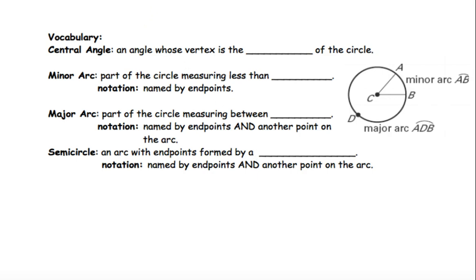This is day two of our circles and we're going to talk about different kinds of angles. The main angle we're going to talk about is called the central angle. The central angle is an angle whose vertex is the center of the circle. This right here is a central angle because that is the center of the circle and that is my angle.